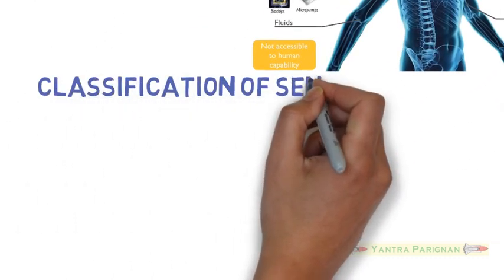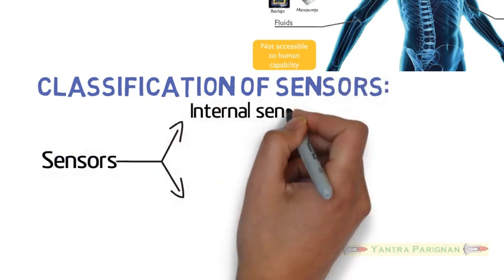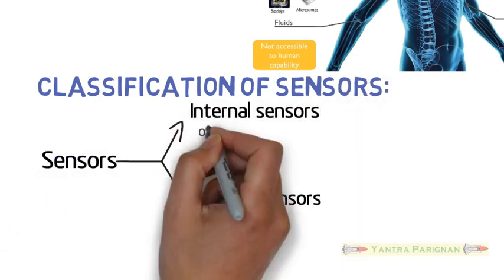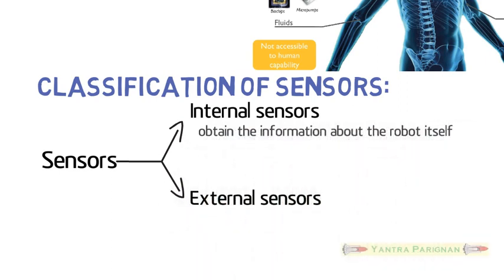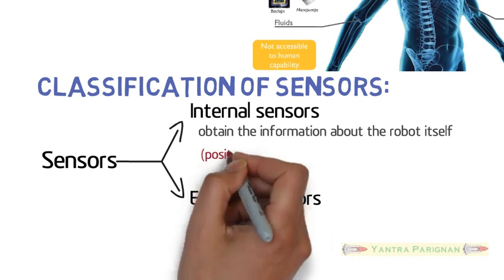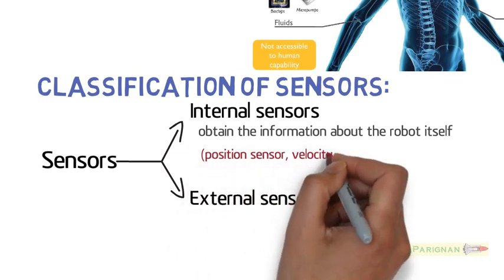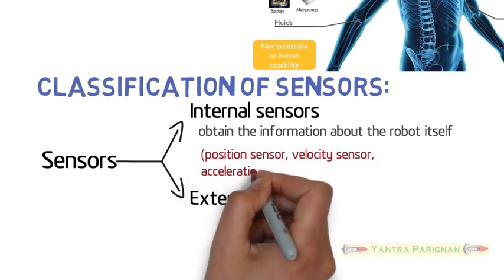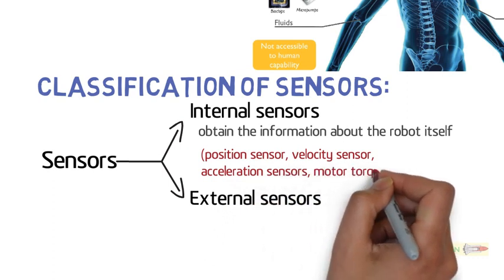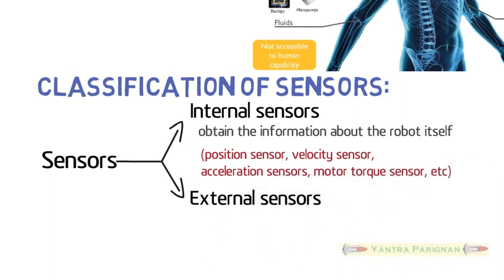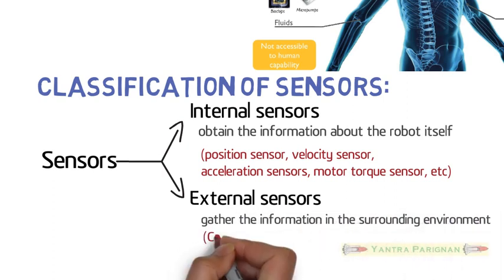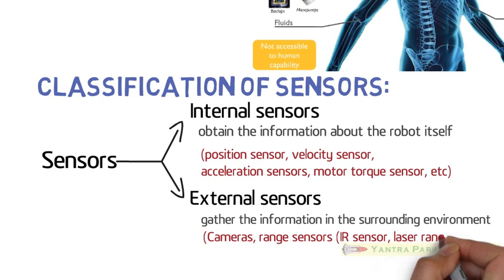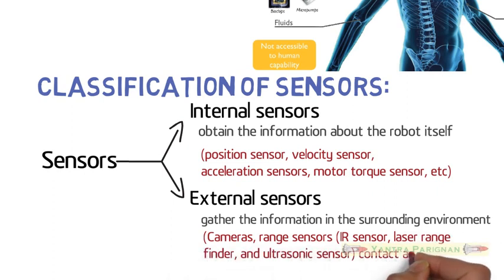Generally the robot sensors are classified into two groups, internal sensors and external sensors. Internal sensors are used to obtain information about the robot itself, such as position sensor, velocity sensor, acceleration sensors, motor torque sensor. While external sensors are used to gather information in the surrounding environment such as cameras, range sensors, contact and proximity sensors, and force sensors.